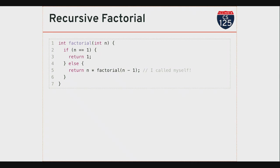Otherwise, I'm gonna make the problem smaller. I'm gonna say: I don't know how to compute the factorial of n, but I know from the definition that the factorial of n is n times the factorial of n-1. So now I've made the problem smaller. Here's my base case—the case where n is equal to 1. When we reach the base case, there's no recursive call. If you ask me what the factorial of 1 is, I know. I don't need to compute it based on the factorial of some other number.